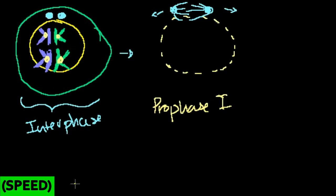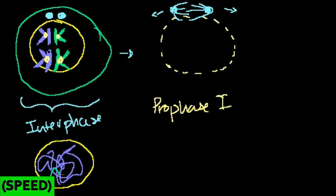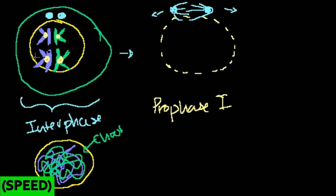If I were to draw it accurately, the chromosomes would be all over the place — very difficult to see in a microscope, just a big mess of proteins, histones, and DNA, which is what's referred to as chromatin. In prophase, that chromatin starts to form into chromosomes with a bit of structure. This is completely analogous to what happens in prophase in mitosis.